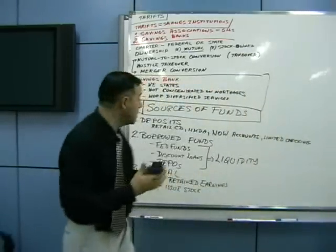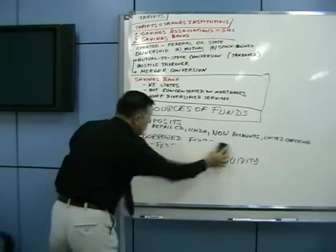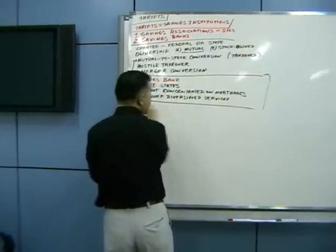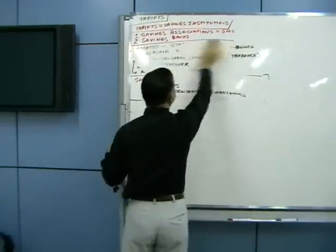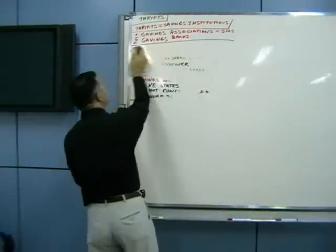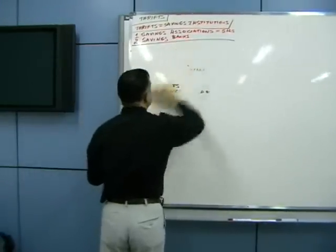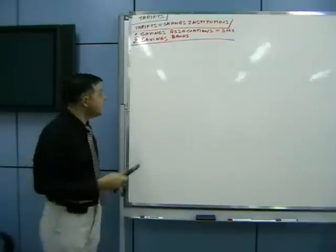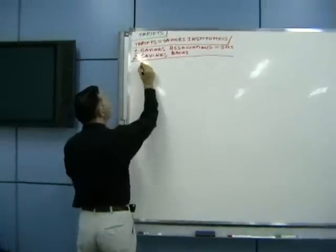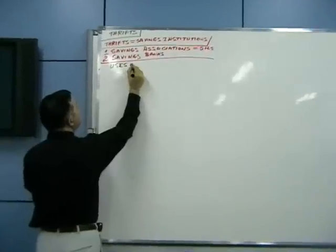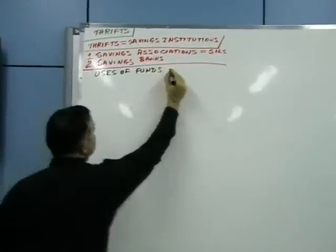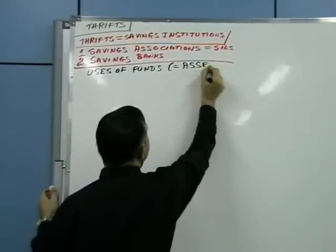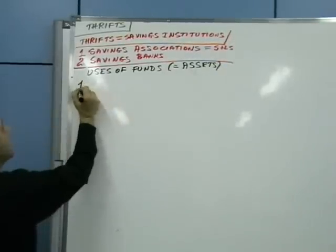Now let's look at uses of funds — what do they do once they get the money. There are six primary uses. Let's list them.